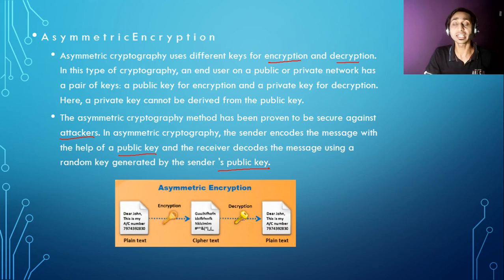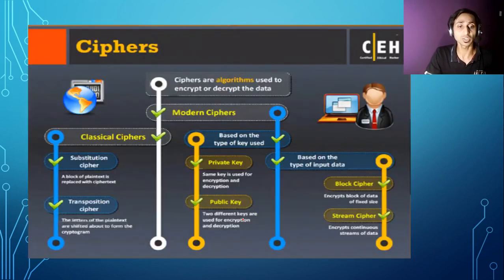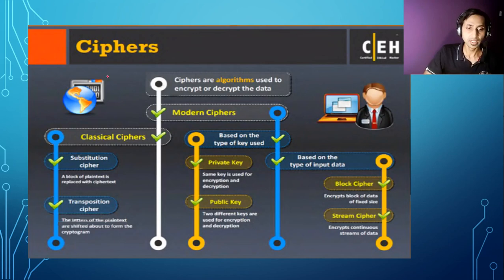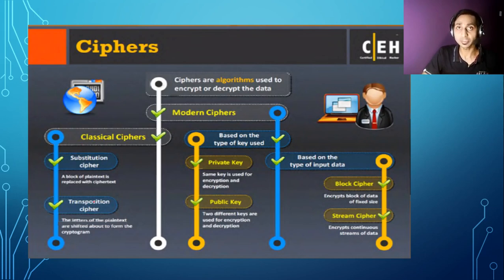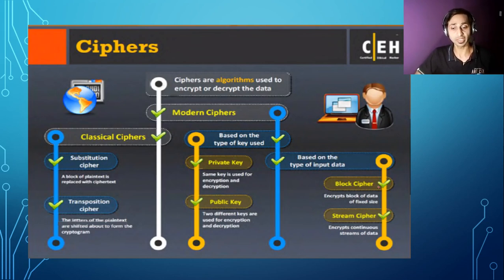When we talk about any kind of asymmetric or symmetric encryption, they all work on the basis of cipher. They all use cipher methodology. So what is a cipher and how many types are there? In the classical era, there were two types: substitution cipher and transposition cipher. In modern times, we have public and private ciphers — which are essentially the same as asymmetric and symmetric encryption. And based on input data, we also have two types: block cipher and stream cipher.